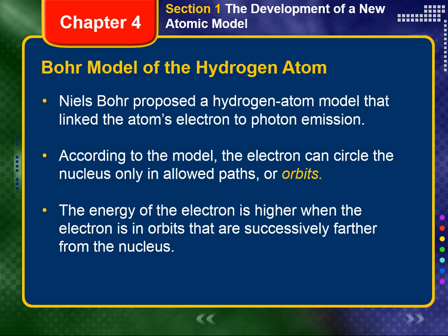According to the model, the electron can circle the nucleus only in allowed paths or orbits. When the electron is in one of these orbits, the atom has a definite or fixed energy. The electron, and therefore the hydrogen atom, is in its lowest energy state when it is in the orbit closest to the nucleus. This orbit is separated from the nucleus by a large empty space where the electron cannot exist. The energy of the electron is higher when it is in orbits that are successively farther from the nucleus.